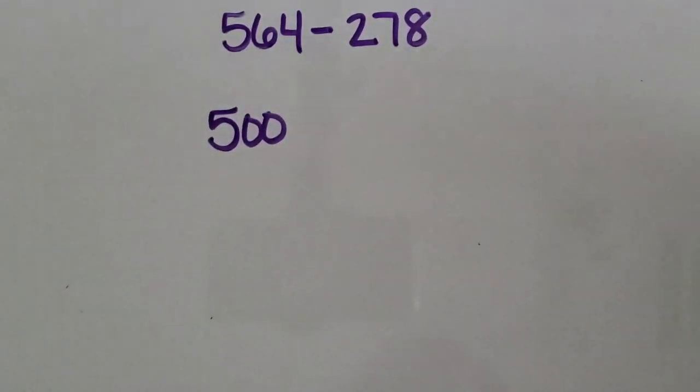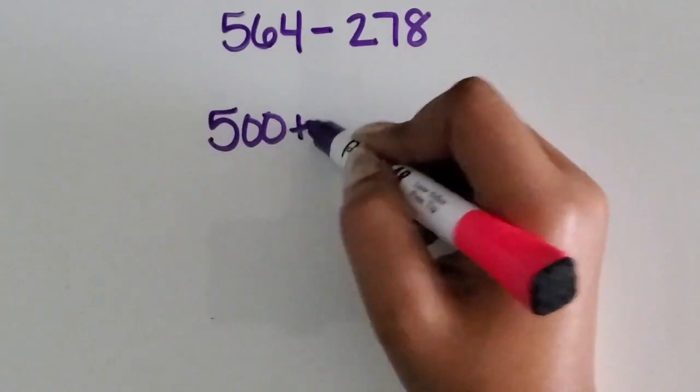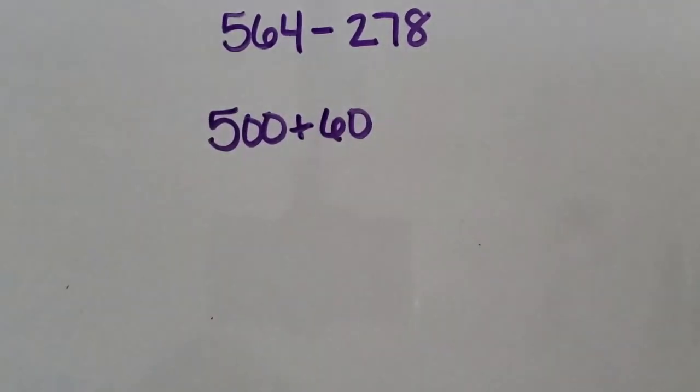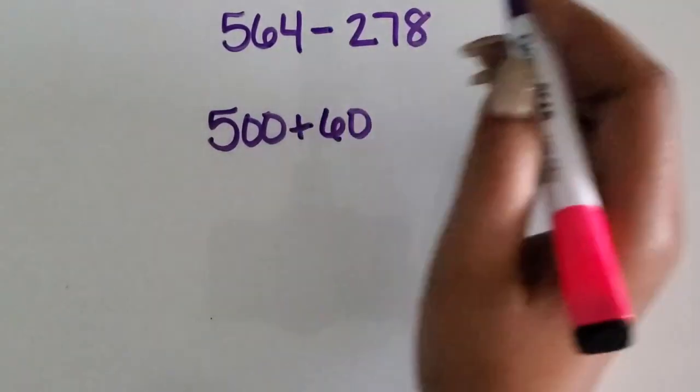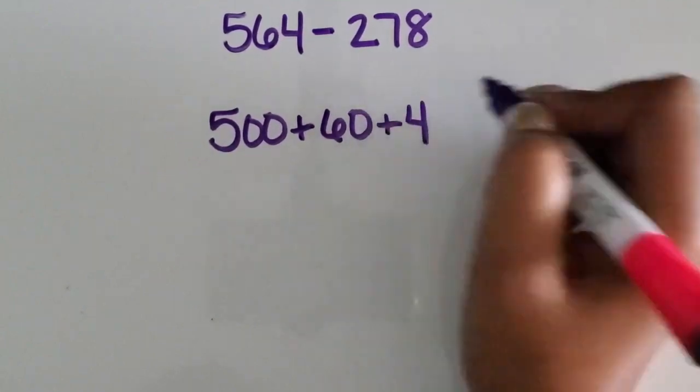So the five is in the hundreds place, so it's 500. The six is in the tens place, so the value is 60. The four is in the ones place, so the value is 4.